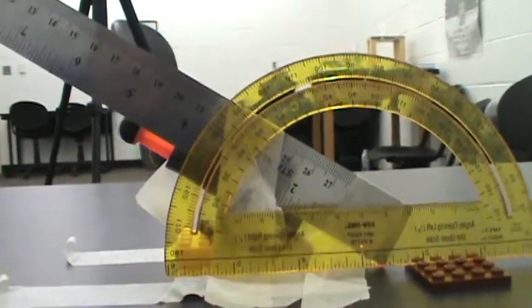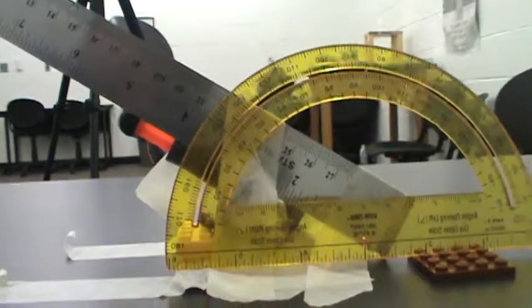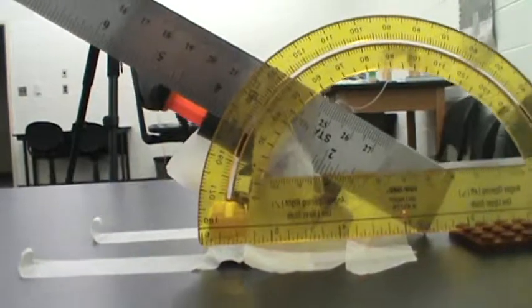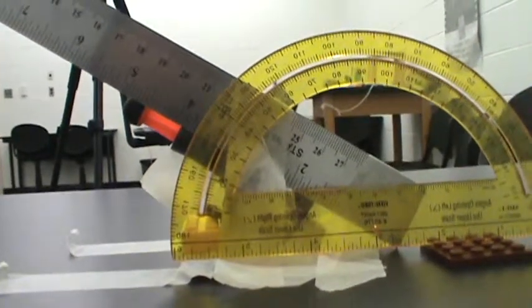I've left it halfway inserted into the cannon so you can see which way it's going to shoot. Notice that the ruler is parallel to the cannonball arm itself.